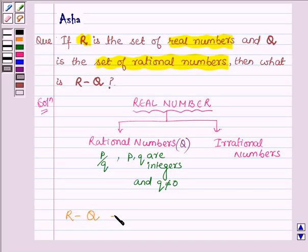where R are real numbers, we have to subtract all the rational numbers from the real numbers and on subtracting all the rational numbers from the real numbers we are left with all the irrational numbers.